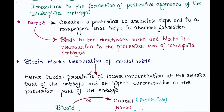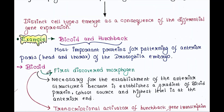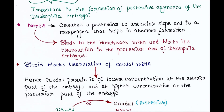Bicoid blocks the translation of caudal mRNA. Hence, caudal protein is at lower concentration at the anterior part of the embryo and at higher concentration at the posterior part. So bicoid is found at the highest amount in the anterior part of the Drosophila embryo, and nanos is a morphogen found at the highest amount in the posterior end.